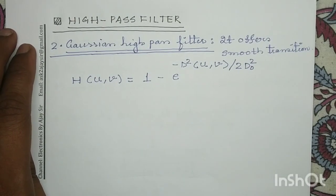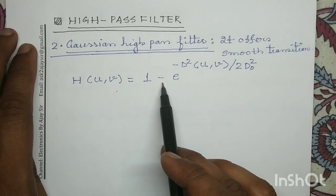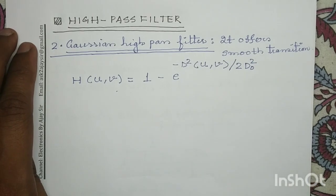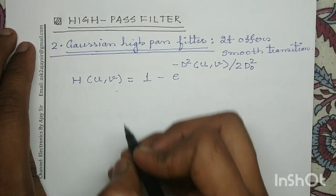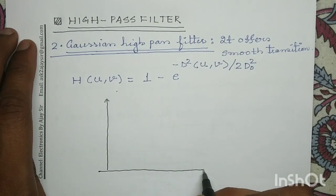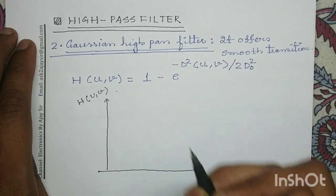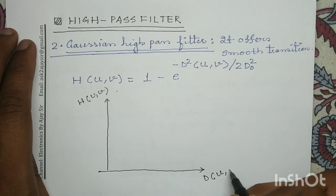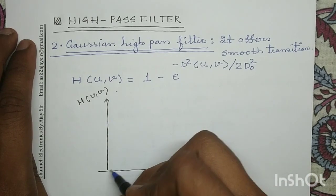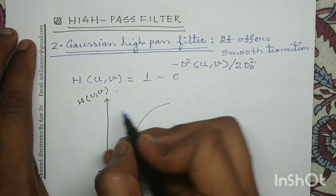The Gaussian high pass filter offers a very smooth transition. Its equation is H(u,v) = 1 − e^(−D²(u,v) / 2D₀²). If we plot the transfer function with H(u,v) on the y-axis and D(u,v) on the x-axis, the Gaussian high pass filter produces a smooth rising transition curve.